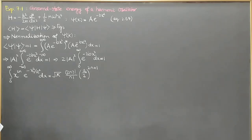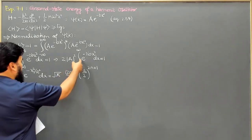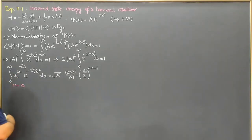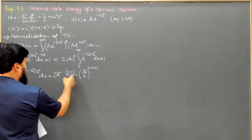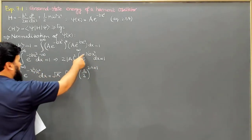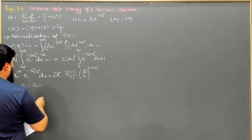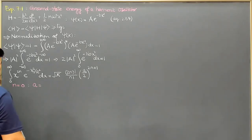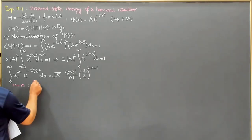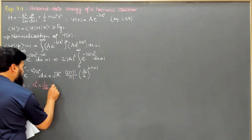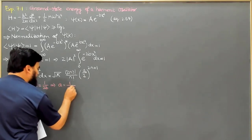Looking at our integral, there is no x term, so n equals 0 because x to the power 0 equals 1. For the value of a in the formula, comparing minus x squared over a squared with minus 2b x squared, we get 1 over a squared equals 2b, so a squared equals 1 over 2b, and therefore a equals 1 over the square root of 2b.